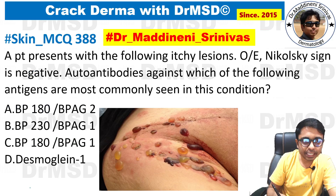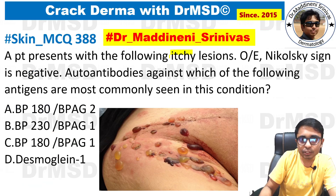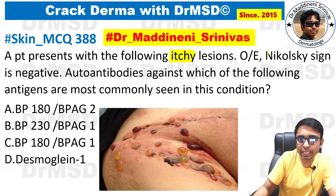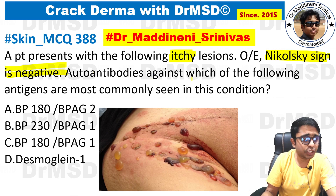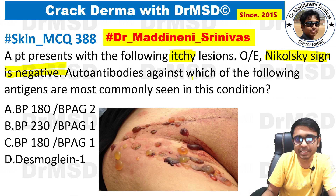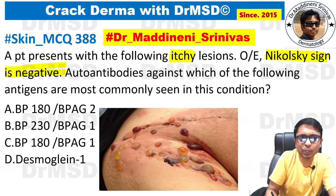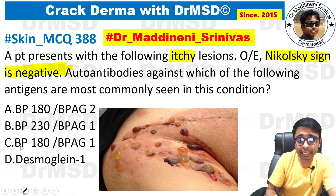Let us see this question carefully. A patient presents with the following itchy lesions. So this is the first clue: itchy lesions. On examination, Nikolsky's sign is negative. Auto antibodies against which of the following antigens are most commonly seen in this condition? With these clues, you must be in a position to diagnose this condition.